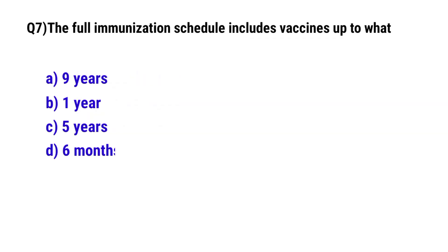Question No. 7. The full immunization schedule includes vaccines up to what age? The correct option is C. Five years.